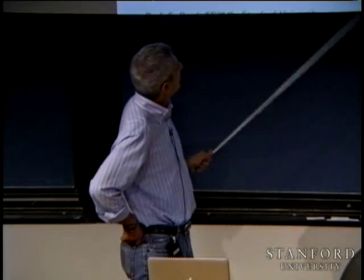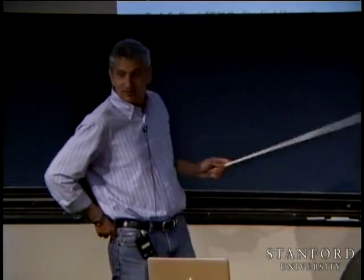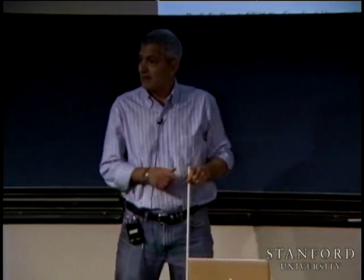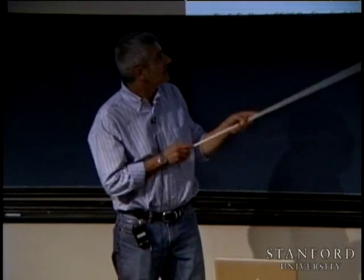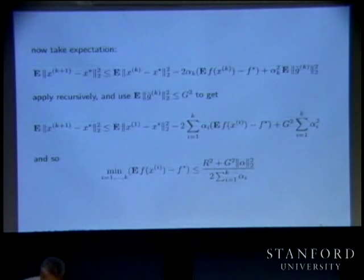Except now it's the minimum of the expected values of the suboptimality. That's actually a random variable here, so that's the difference.